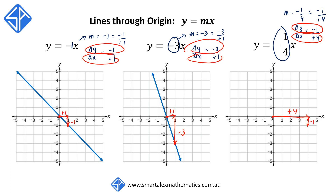So going down 1 unit to get to the next point. We then join up and we have the graph y is equal to negative one-quarter x.